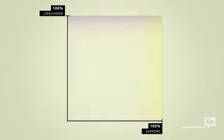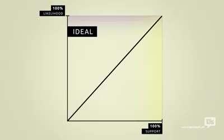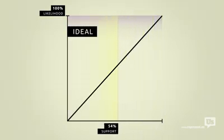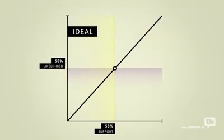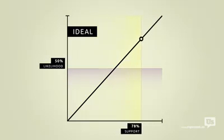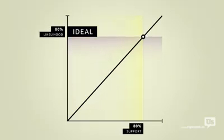On this graph an ideal republic would look like this. If 50% of the public supports an idea there's a 50% chance of it becoming law. If 80% of us support something there's an 80% chance. You get the idea.